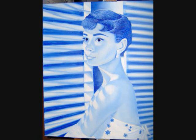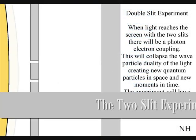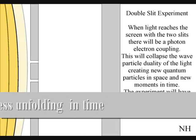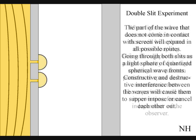The only way to see this happen directly with light is in the two slit experiment. When the wave function reaches the screen with the two slits the photon will react with the electrons of the screen. This will collapse the wave particle duality of the light creating new quantum particles in space and new moments in time.